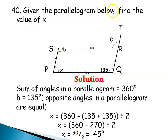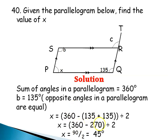Question 40: Given the parallelogram, find the value of X. The sum of angles in a parallelogram is 360 degrees, and opposite angles are equal. If one angle is 135 degrees, its opposite is also 135. So 135 + 135 = 270. Then 360 − 270 = 90, which is the sum of the remaining two angles. Dividing by 2 gives X = 45 degrees.